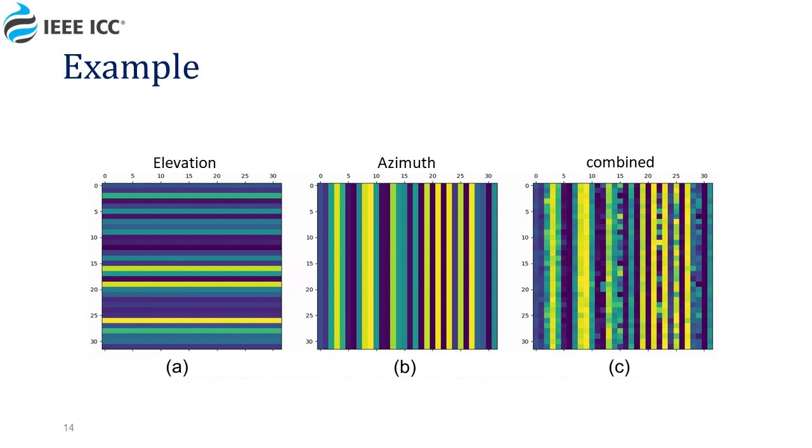For example, in this slide you can see the output of the first subnet having the fixed rows in figure A, the output of the second subnet having the fixed columns in figure B, and the combination of the two subnetworks in figure C.